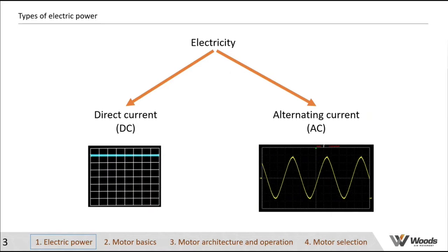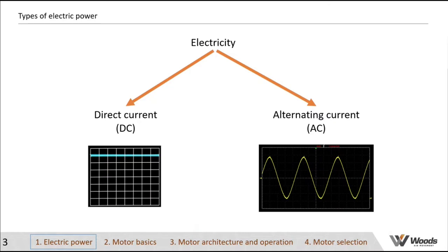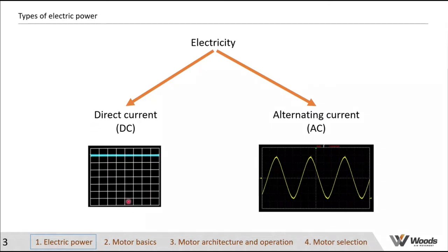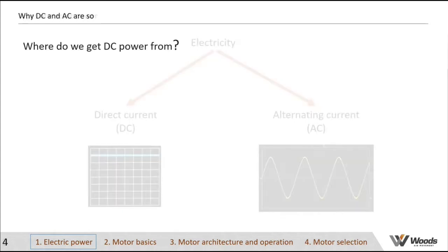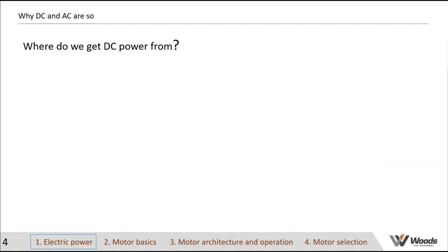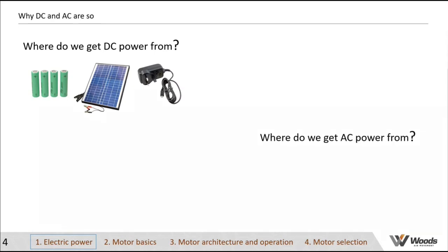You can see both types illustrated on scope views — current over time. Moving on to DC power: where does it come from? It comes from batteries, solar panels, and DC power supplies. Batteries have current flowing in one direction with positive and negative terminals. Solar panels work in a similar way, as do power adapters like chargers for mobile phones and laptops — they all work off DC direct current.